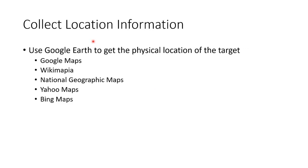You can collect location information using Google Earth, Google Maps, Wikimapia, National Geographic Maps, Yahoo Maps, and Bing Maps to find out where they physically are. If you're going to do social engineering or a physical attack, we need to know physically where they are, any approaches and roads, places we can hang out, observe from, and watch through binoculars.